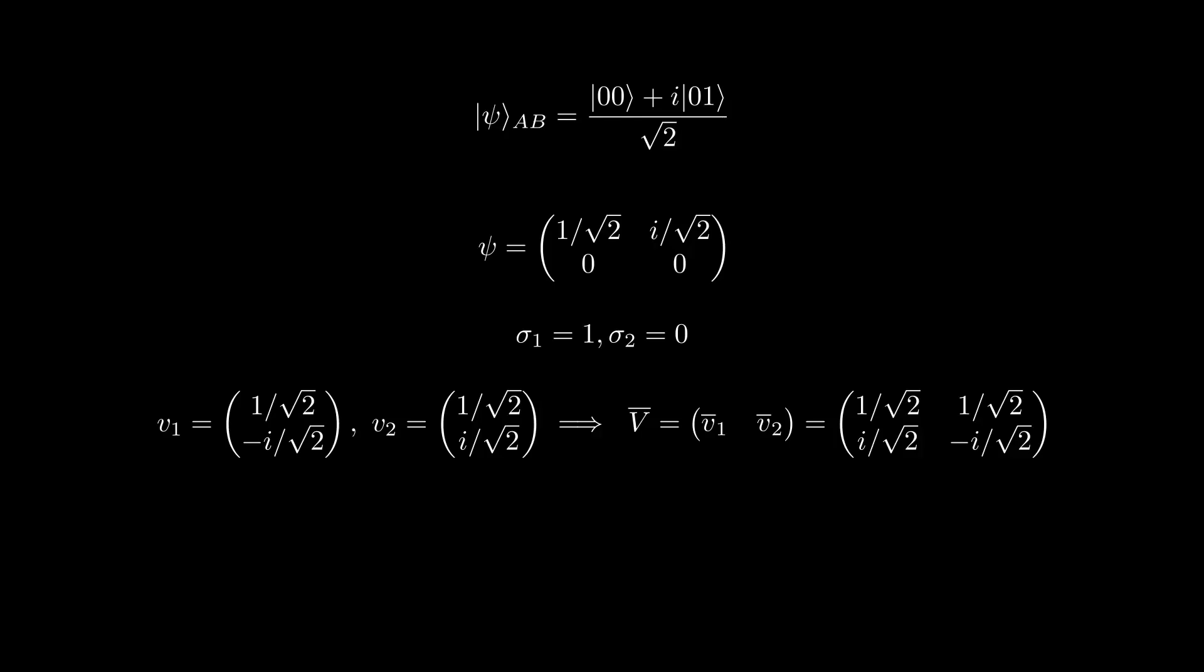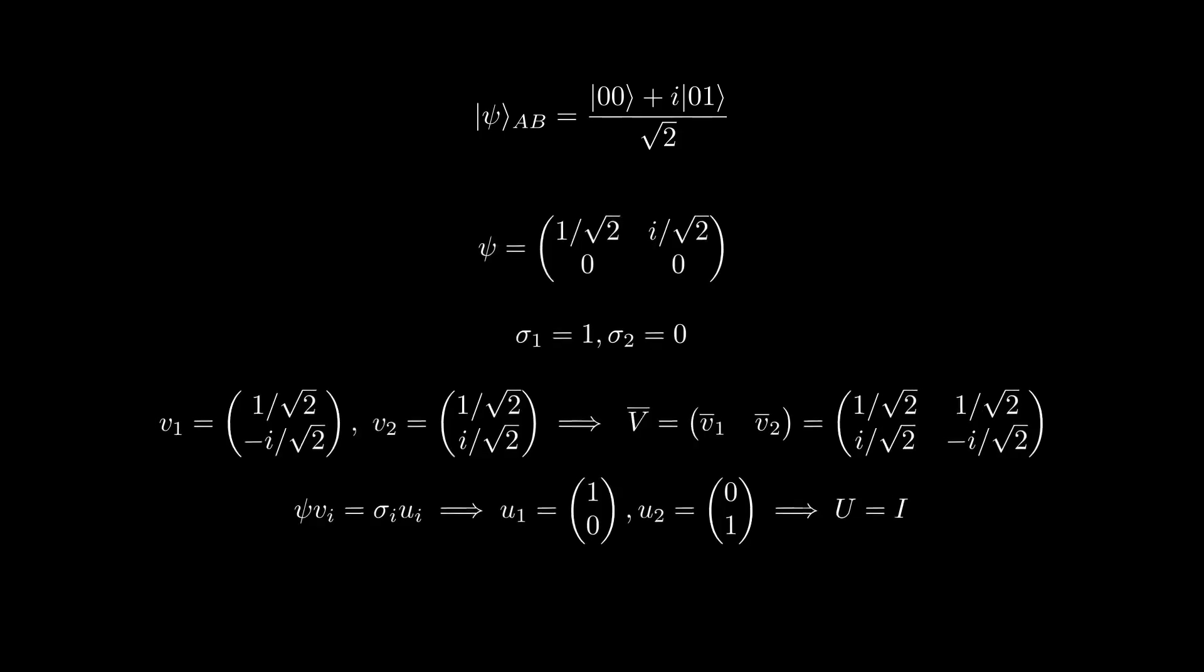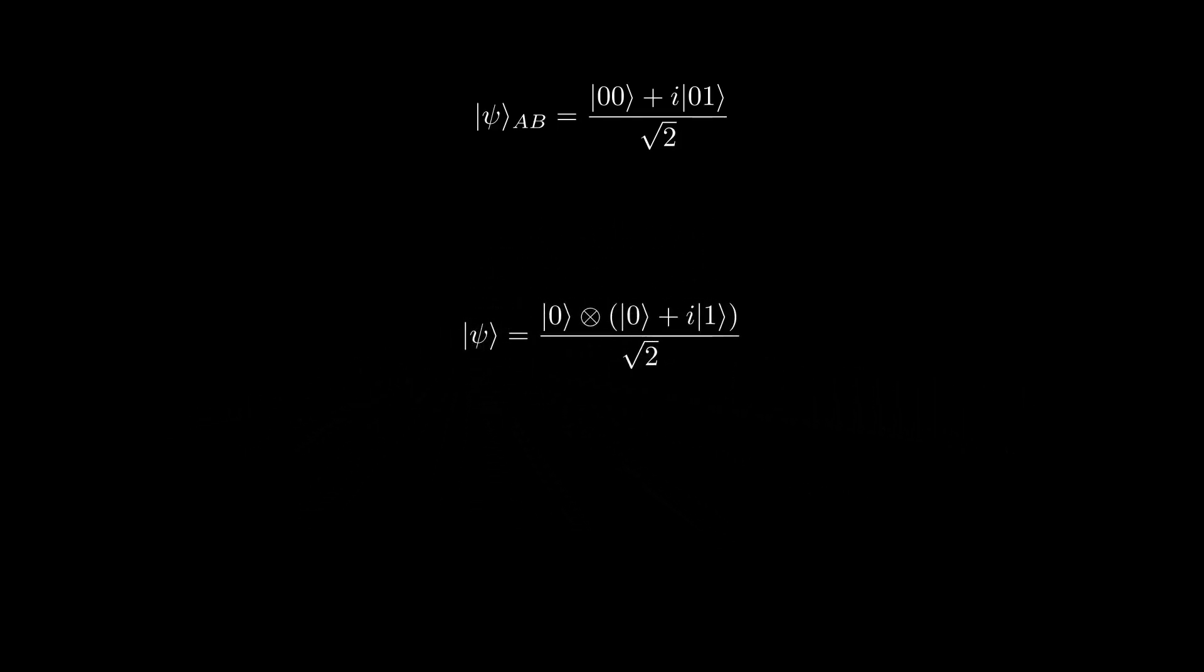In order to get u, we could either perform the same process for psi psi dagger, or we could use a trick which states that psi vi is equal to sigma i ui. For sigma 1 equals 1, we have that u1 equals |1,0⟩. And since the other singular value is 0, we simply choose u2 equal to |0,1⟩ as padding just to make u unitary. Since we have Schmidt rank 1, we only consider the first column of u and v. Hence, we have that our state can be written as follows in terms of its Schmidt decomposition. This should be fairly obvious from the fact that you could factor the original directly without the need for this calculation.